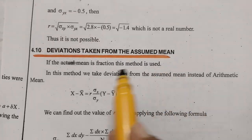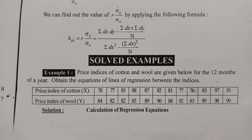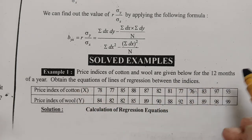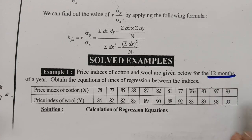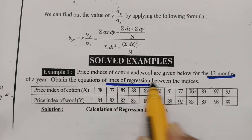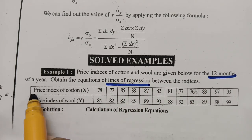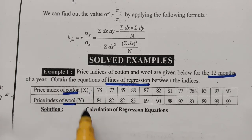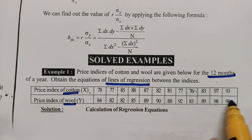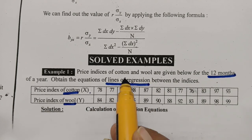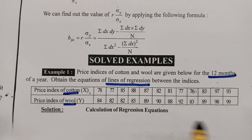The problem: price indices of cotton and wool are given for 12 months (n = 12). We need to obtain the equations of the lines of regression between the indices. The price index of cotton is taken as x and wool as y. We have to calculate two regression lines.